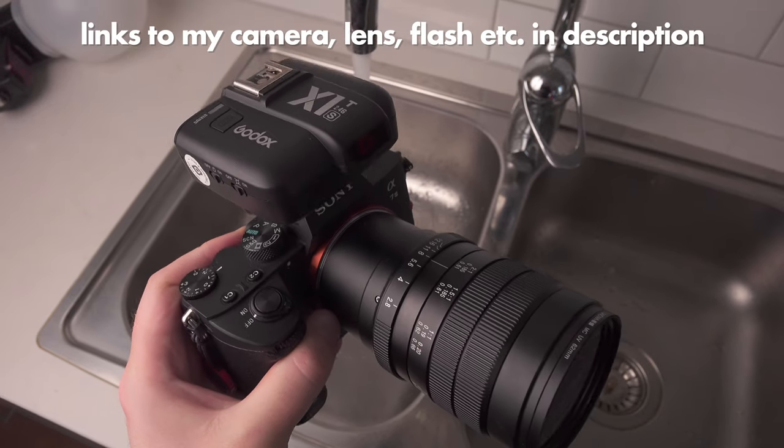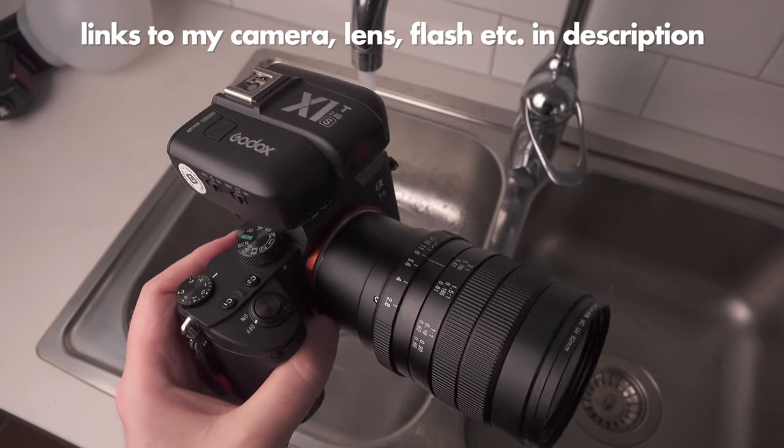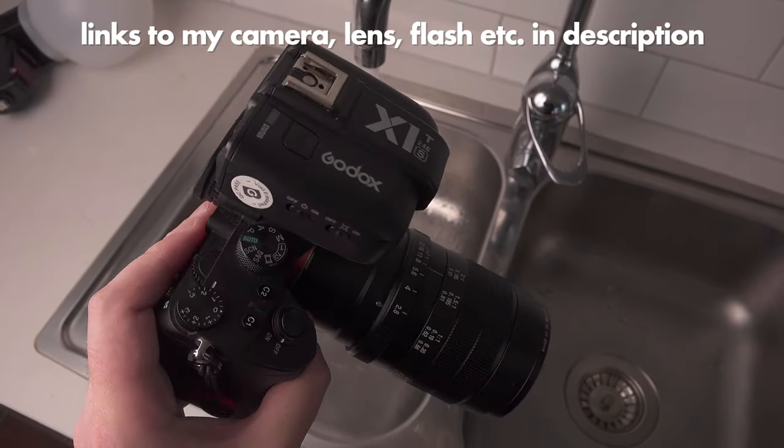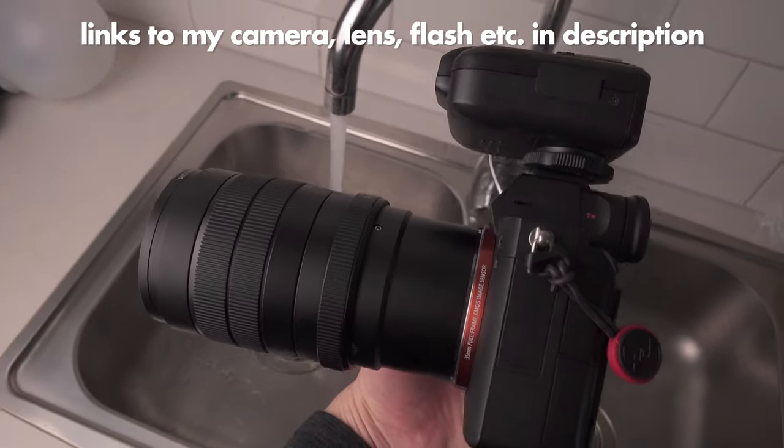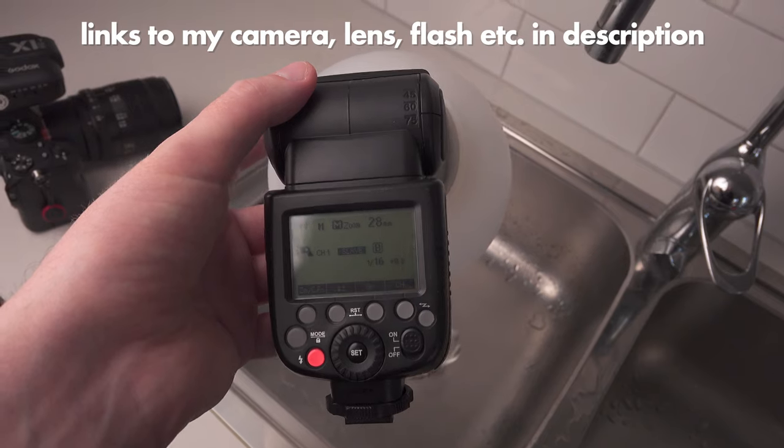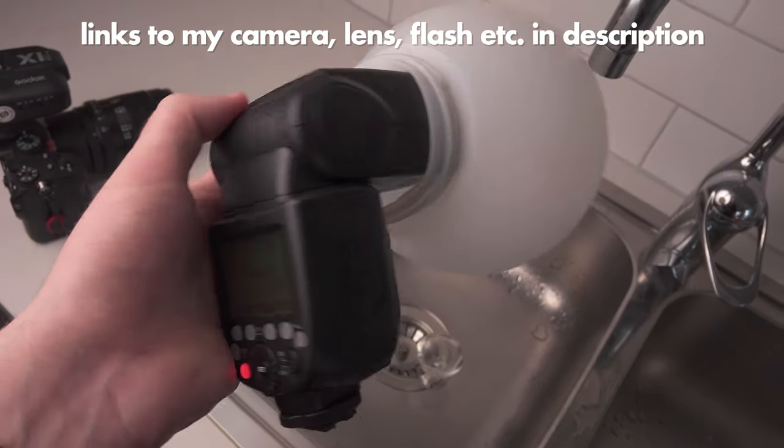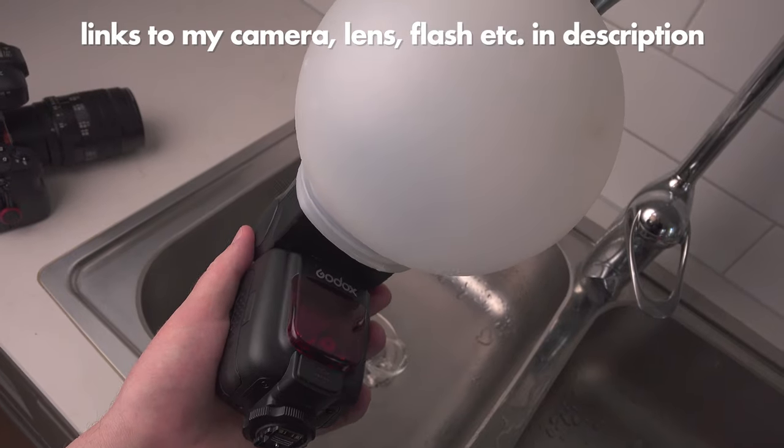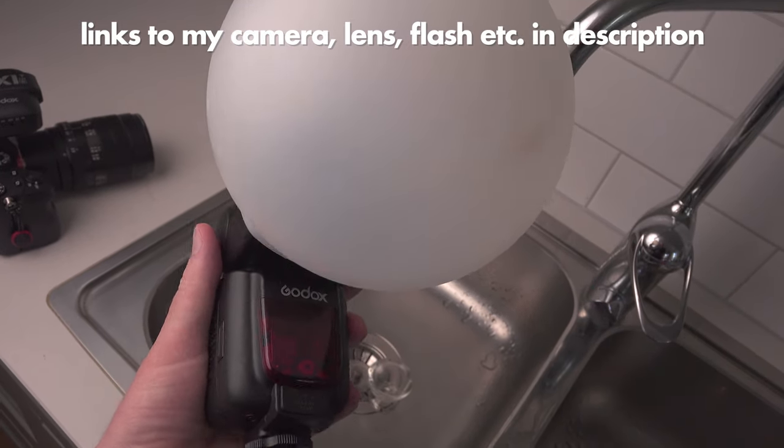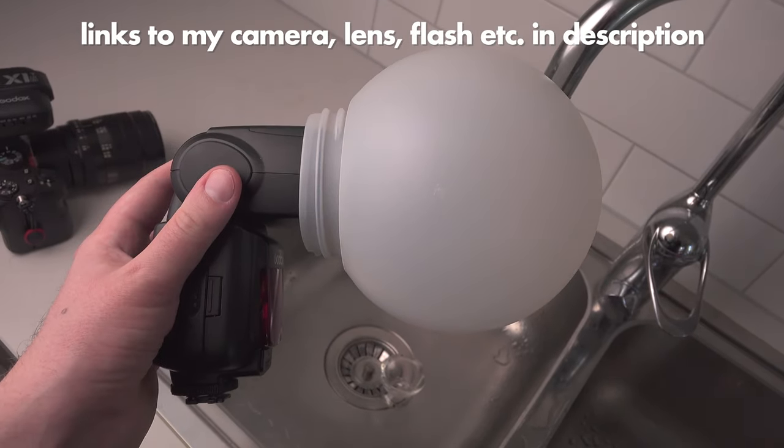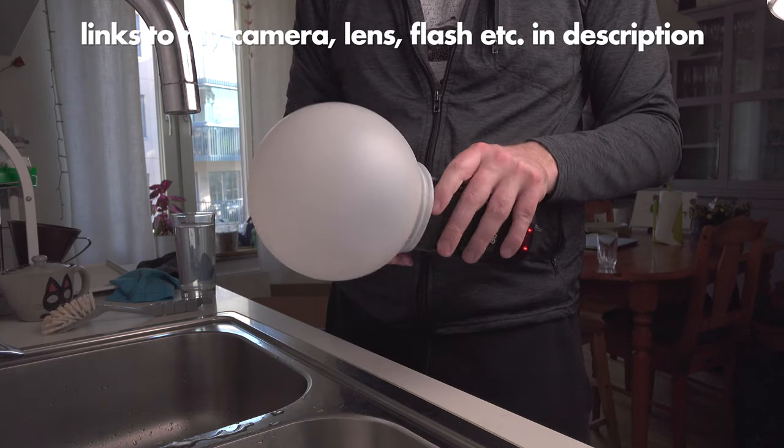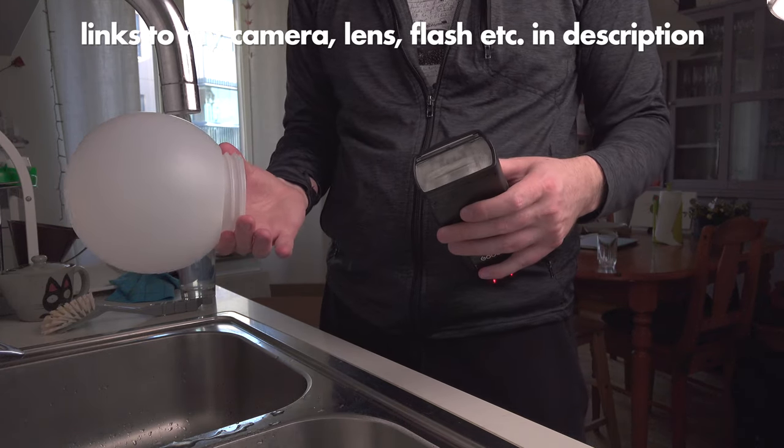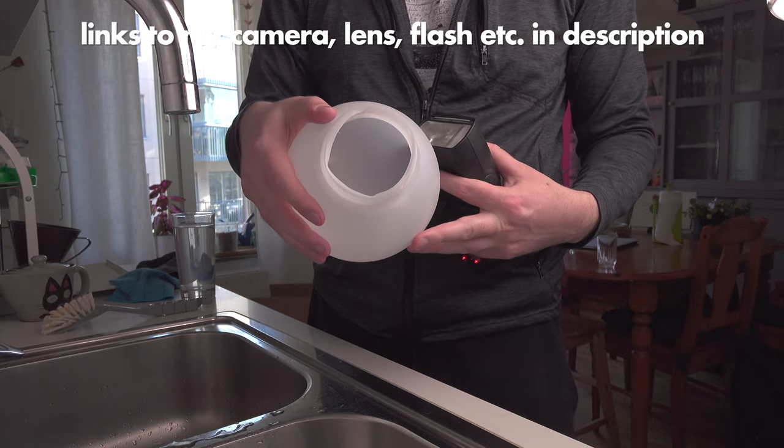So you need a camera, some kind of macro lens, doesn't need to be the 2x1 I use, and you need an external flash. I use my trusty Godox TT685 with a plastic lamp dome as a diffuser. This is just a regular lamp dome that you can get in a hardware store. Please don't ask me where to buy it because I bought it in my local hardware store.